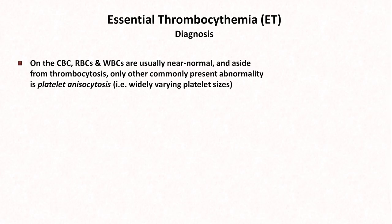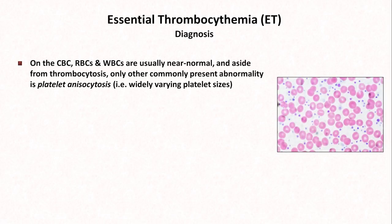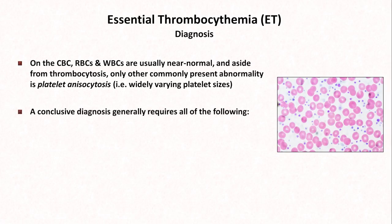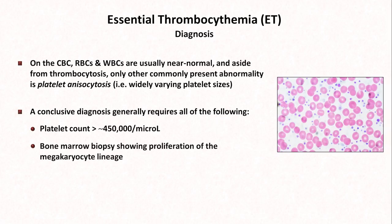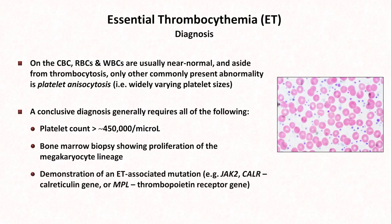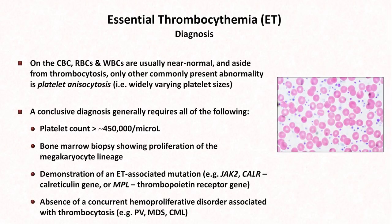To diagnose ET, the CBC typically shows normal or near-normal red and white blood cells, and aside from thrombocytosis, the only other commonly present abnormality is platelet anisocytosis on a blood smear — increased variability in platelet size. A conclusive diagnosis of ET requires all four of the following: thrombocytosis; a bone marrow biopsy showing proliferation of the megakaryocyte lineage; demonstration of an ET-associated mutation, specifically in JAK2, CALR (the calreticulin gene), or MPL (the thrombopoietin receptor gene); and absence of a concurrent hemoproliferative disorder associated with thrombocytosis, such as PV, MDS, or CML.